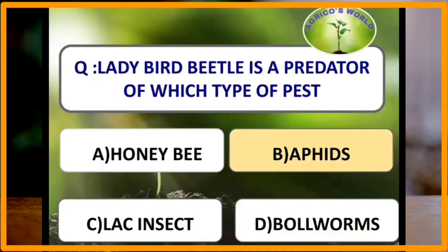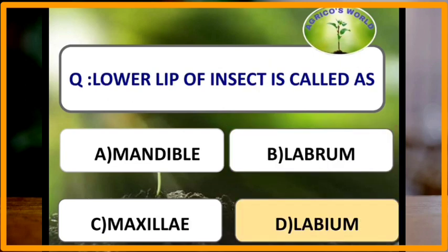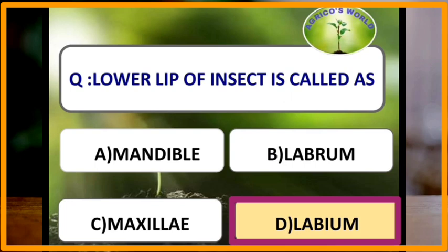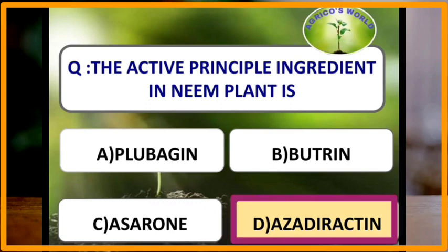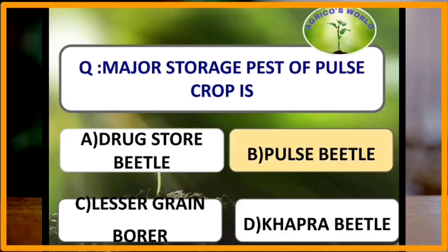Ladybird beetle is a predator of aphids. The lower lip of an insect is called labium, whereas labrum is the upper lip of the insect. The active principal ingredient in neem plant is azadirachtin. Azadirachtin is the active principal ingredient present in the neem plant.